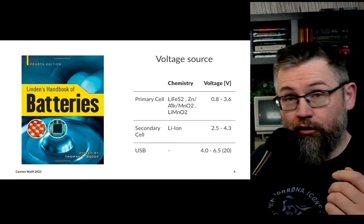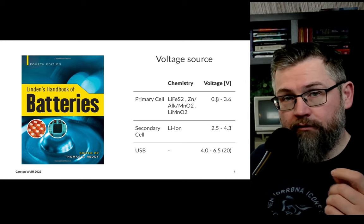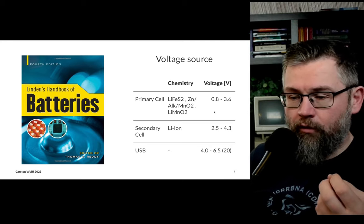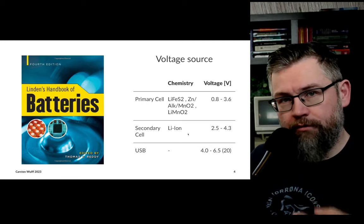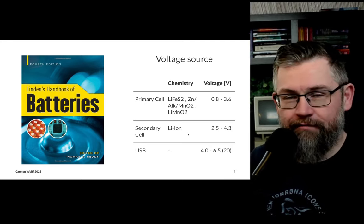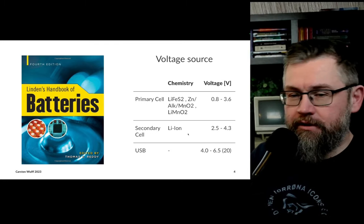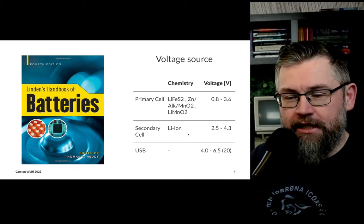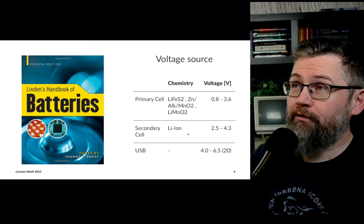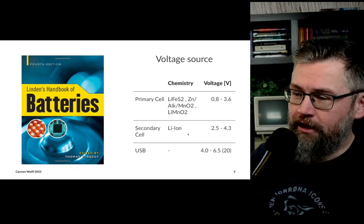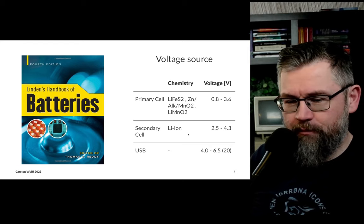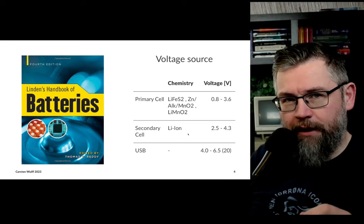For primary cells — non-rechargeable types — you'll have voltages from 0.8V for small zinc-air batteries up to 3.6V for typical coin cell batteries. For secondary cells, which can be charged, you'll find voltages from 2.5 to 4.3V. For USB-powered stuff, maybe around 5 volts. There's a great book called Linden's Handbook of Batteries that goes through all the battery chemistries, discharge curves, energy density in watt-hours per kilo or per volume.